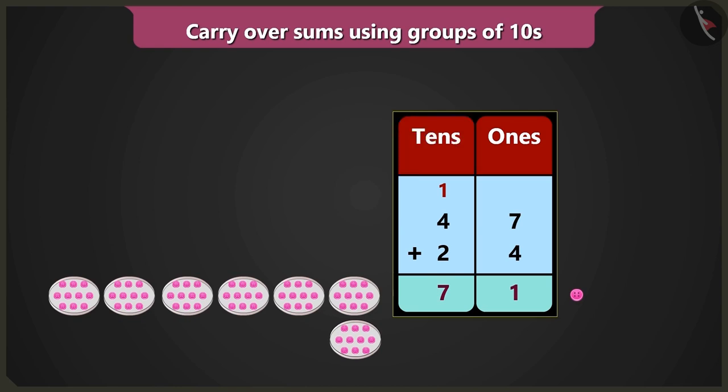Yes! So this way there are a total of seven tens and one ones, which means there are seventy-one buttons. So forty-seven added to twenty-four will be seventy-one.